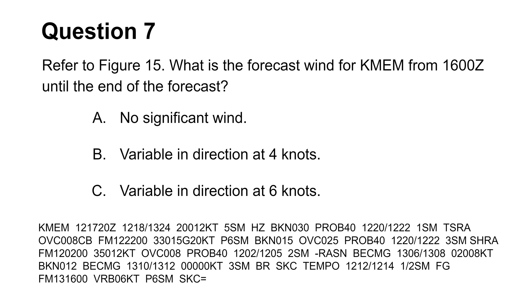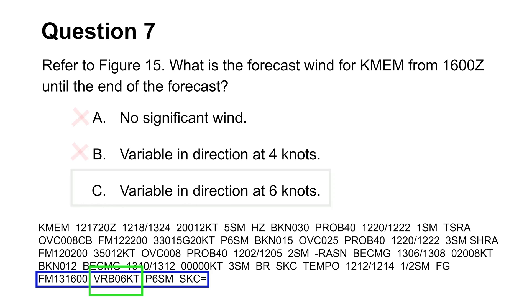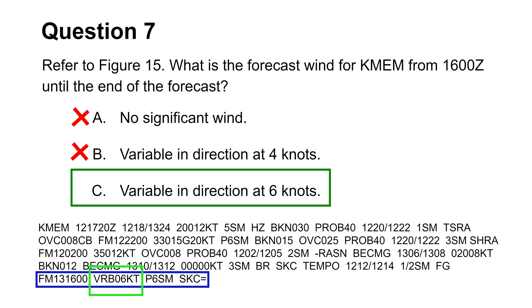The seventh question wants you to find the forecast wind from 16:00 Zulu time until the end of the forecast. To find this valid period, look at the very end of the forecast report. Here is the relevant information about wind direction and velocity. The abbreviation VRB stands for variable direction, while the speed would be 6 knots. This makes choice C the answer.